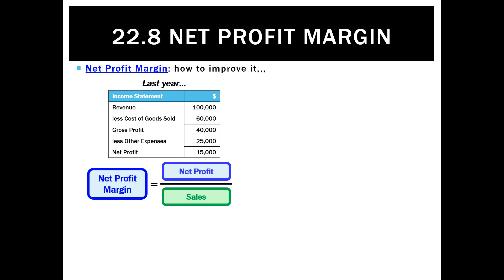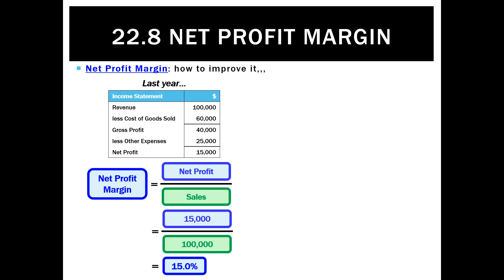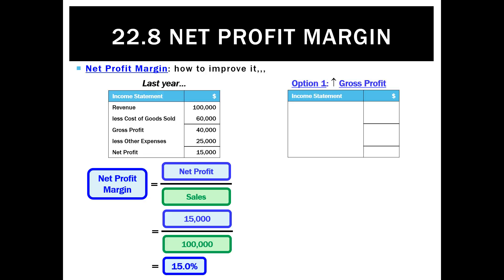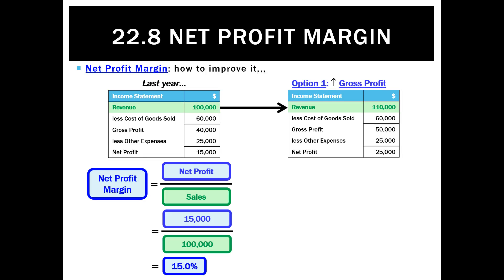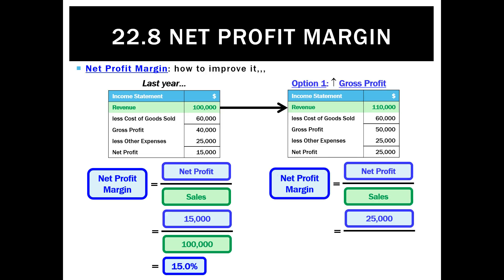How can we improve the net profit margin? The first way is to improve our gross profit margin. If we had $15,000 in net profit last year on sales of $100,000, that's 15%. To make gross profit go up, we can either increase sales — which would flow through and change several numbers — and we'd end up with a net profit of $25,000 on sales of $110,000, giving a net profit margin of 22.7%.